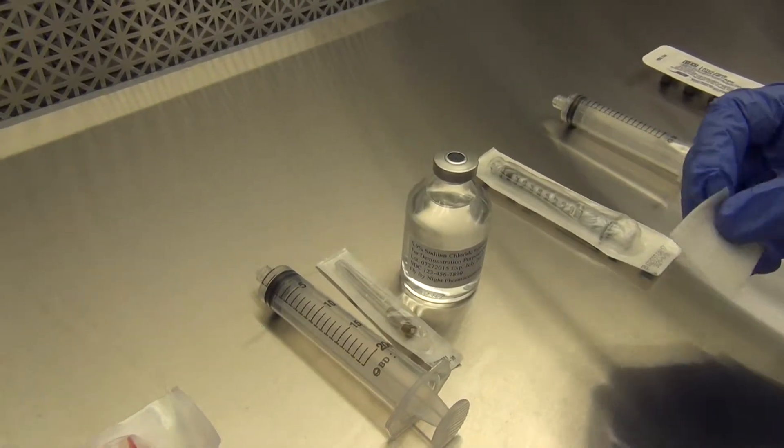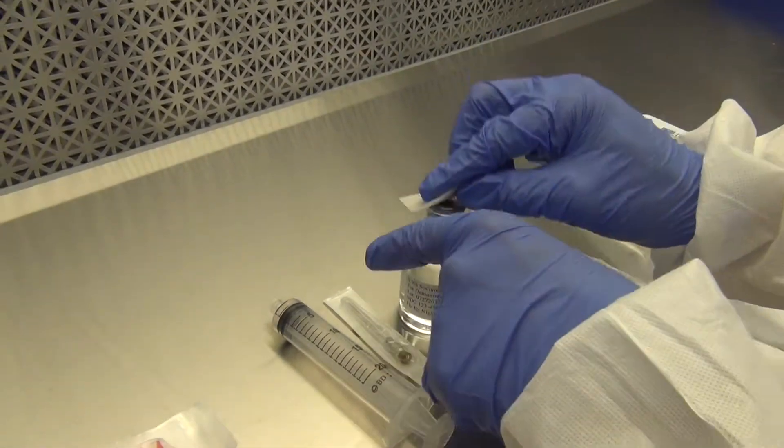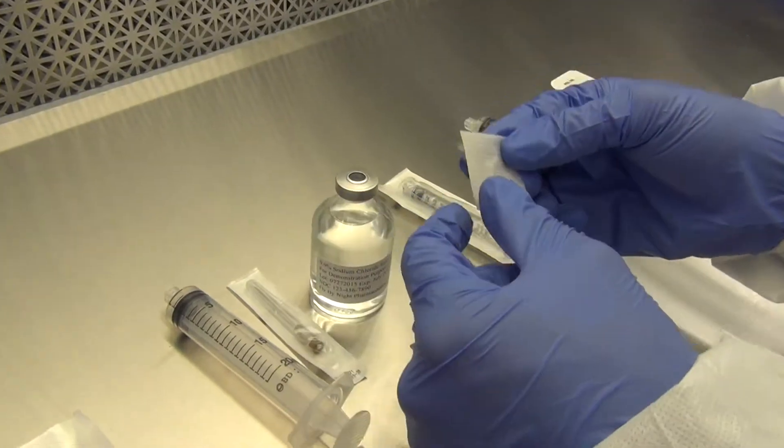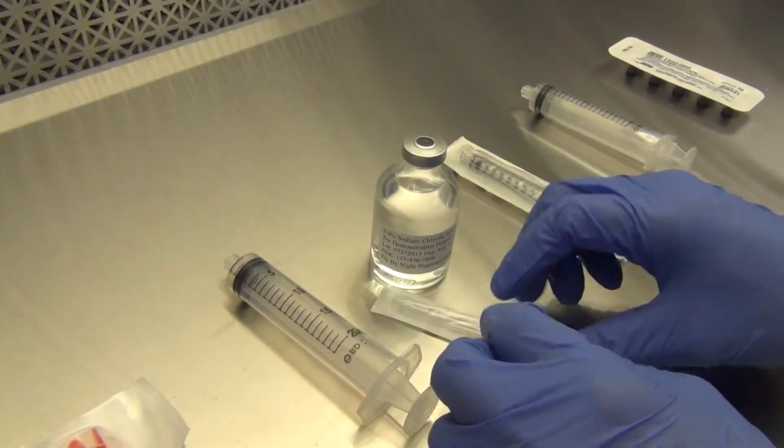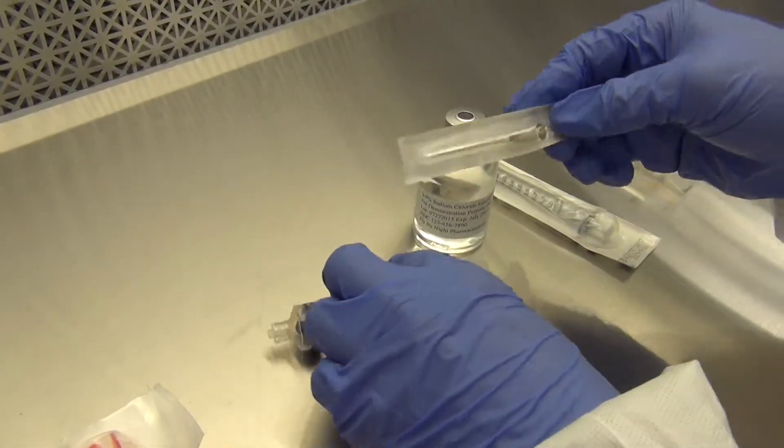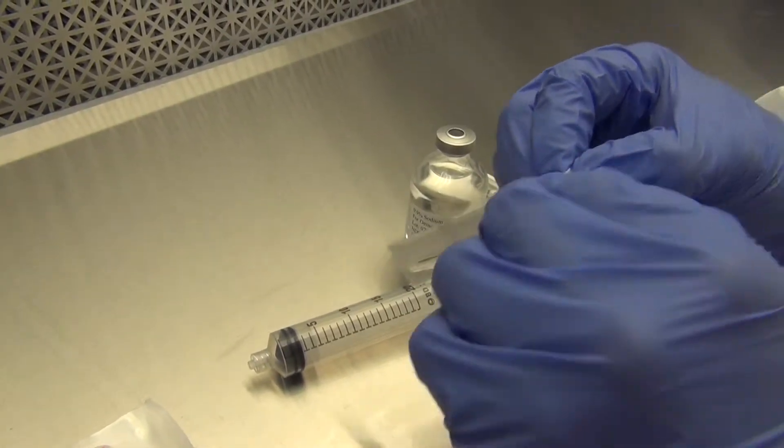Use another alcohol wipe to swab the sodium chloride vial. Affix a sterile needle to the 20 milliliter syringe.